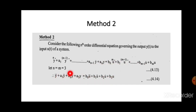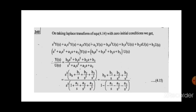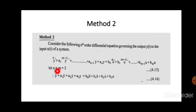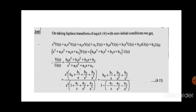We can assign state variables x₁, x₂, x₃ instead of y. In method 1, we had substituted y equal to x₁, y-dot equal to x₂, and y-double-dot equal to x₃. But here in method 2, we are going for taking the Laplace transform.